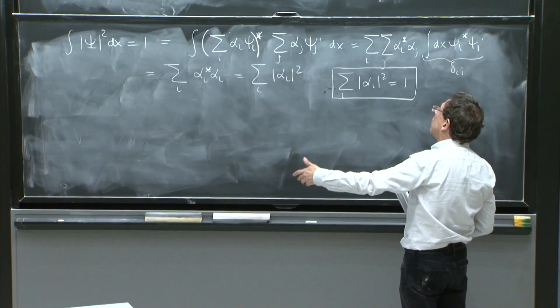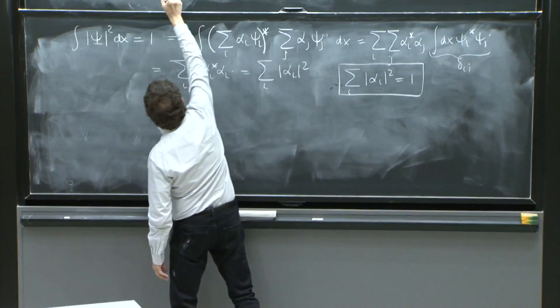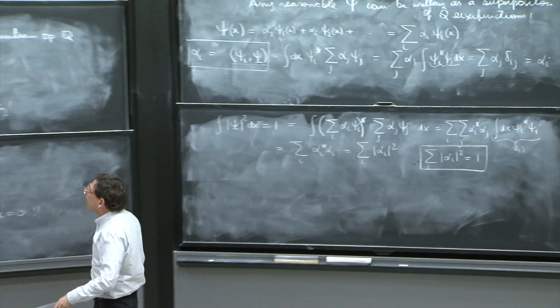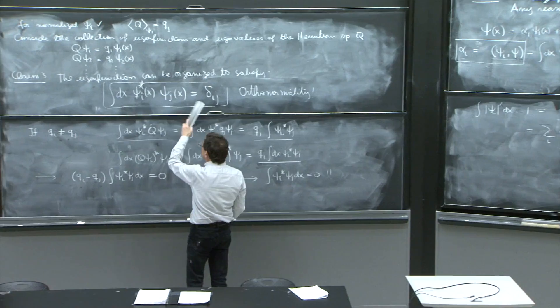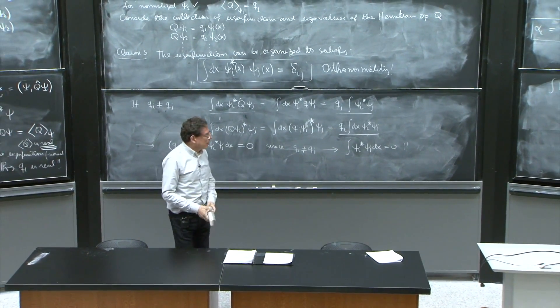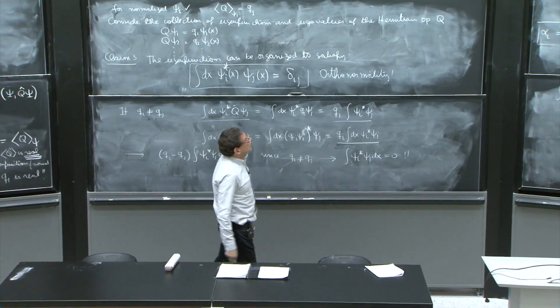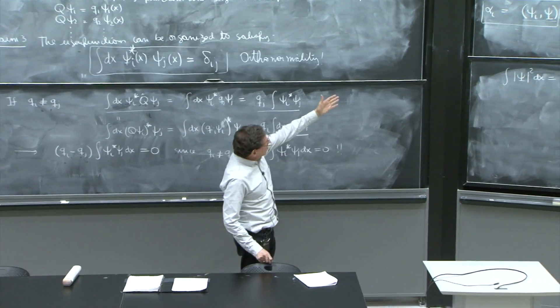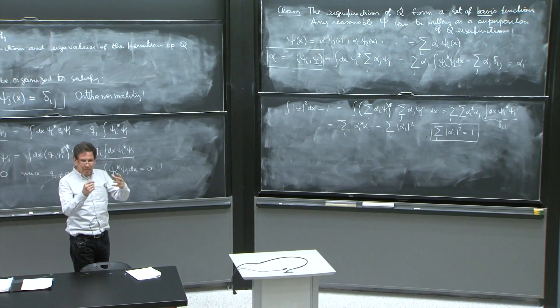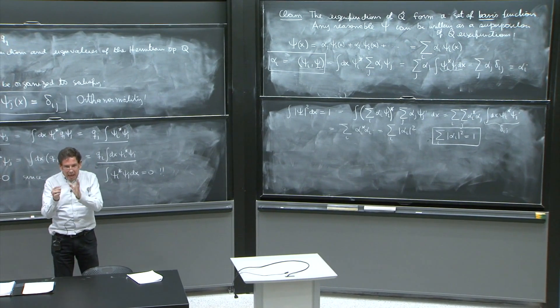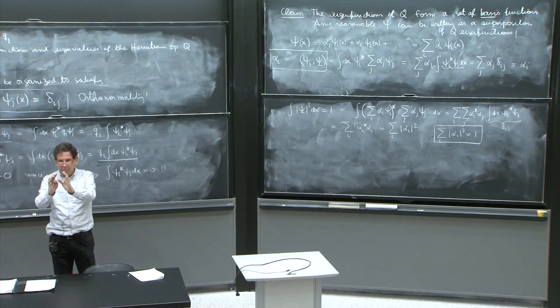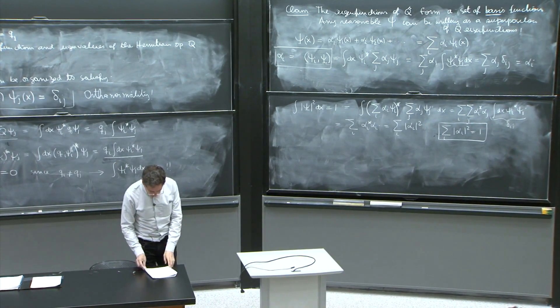The normalization is computed by doing the sums of squares of each coefficient. The mixings don't exist because there's no mixings here. So everything is separate, everything is unmixed, everything is nice. So there you go. This is how you expand any state in the collection of eigenfunctions of any Hermitian operator that you are looking at.